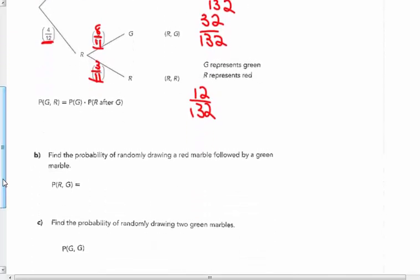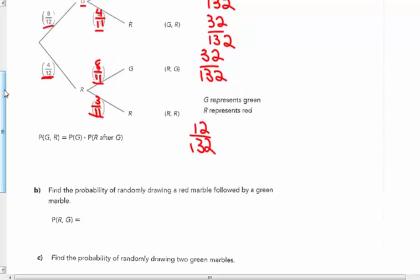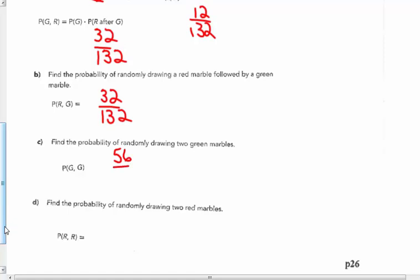So the probability of green and then red would be thirty-two out of one-hundred-thirty-two. Find the probability of randomly drawing a red marble followed by a green: red and then green would be four-twelfths times eight-elevenths. Looking back up at my tree diagram, that's thirty-two out of one-thirty-two. Probability of drawing two green marbles, green-green, I have eight-twelfths times seven-elevenths, which is fifty-six out of one-hundred-thirty-two. And find the probability of randomly drawing two red ones: that's four-twelfths times three-elevenths, which is twelve out of one-hundred-thirty-two.